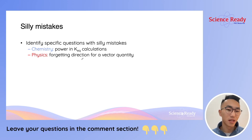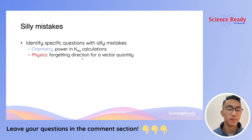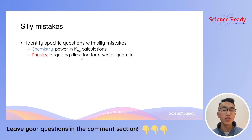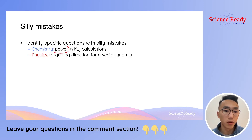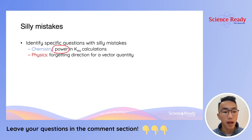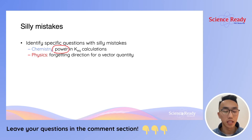Now, if this applies to you, here are some things you can do to minimize and reduce the number of marks you lose to silly mistakes. When you're going through your past exam papers and you've made a silly mistake in a given question, I want you to identify specifically what that silly mistake is. Is it something calculation related? For example, in chemistry, is it because you wrote down the wrong power when performing equilibrium constant calculations? I want you to jot down and describe this silly mistake as precisely as possible.